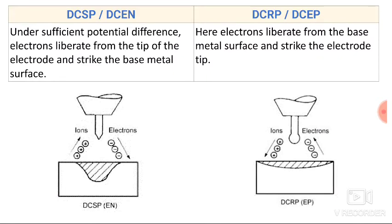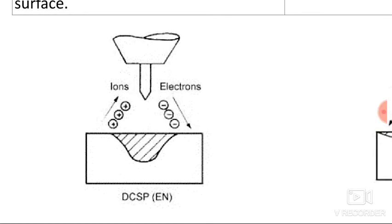Under sufficient potential difference, electrons are liberated from the tip of the electrode and strike the base metal surface. As electrons always flow from the negative terminal to the positive terminal, and in straight polarity the electrode is connected with the negative terminal and the base plate with the positive terminal, the electrons are liberated from the tip of the electrode and strike the base metal.